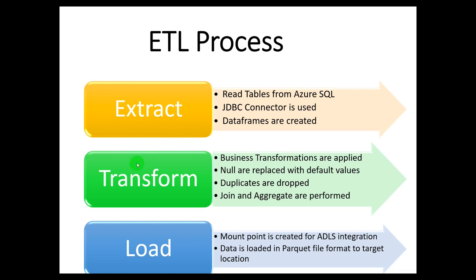In the next stage, we are going to transform the extracted data from Azure SQL. In this stage, we are going to apply business rules. For this demo, I am going to perform simple transformations such as replacing null values with some default value in the dimension table, removing duplicate records from the fact tables, then joining fact and dimension tables based on a joining key. Finally, I will do some aggregation to get meaningful output at the end of the transformation stage.